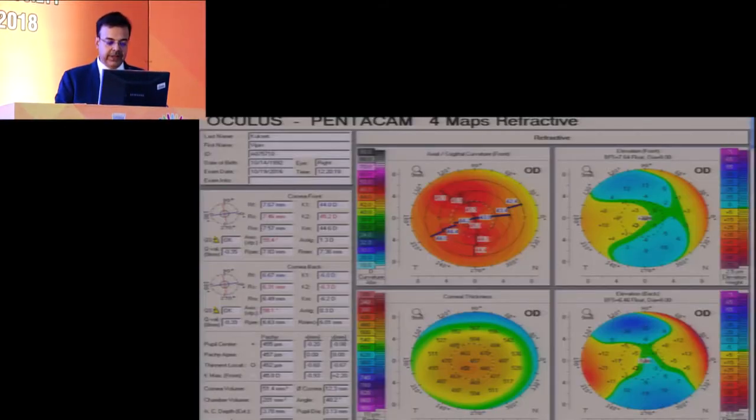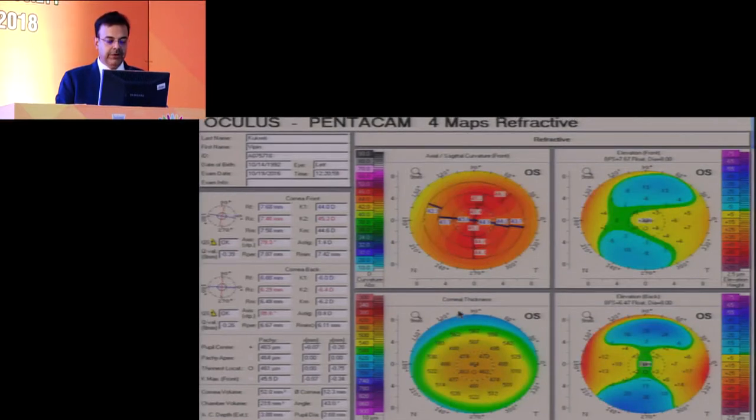This is what the pentacam maps look like. If you'll notice there is a skew in the axis which is a bit of a flag, and if you'll see the elevation maps, the pachymetry is small—it's about 460. If you'll notice the other eye, that is 464, similar skew.